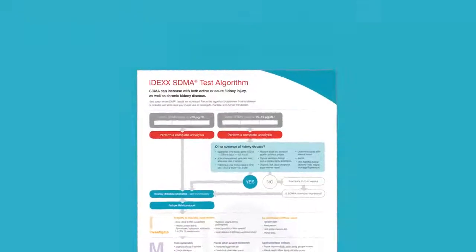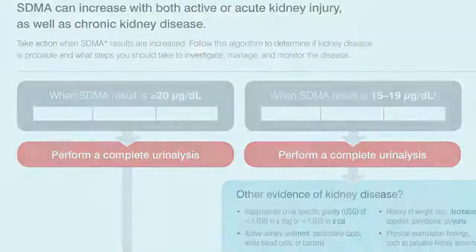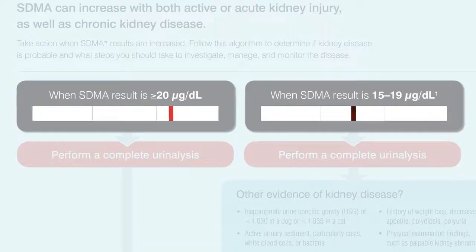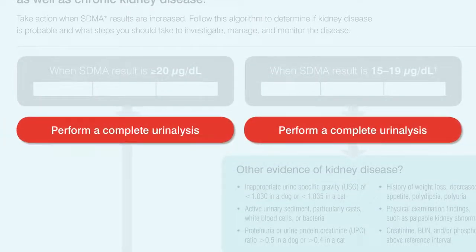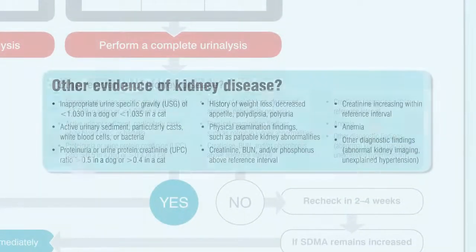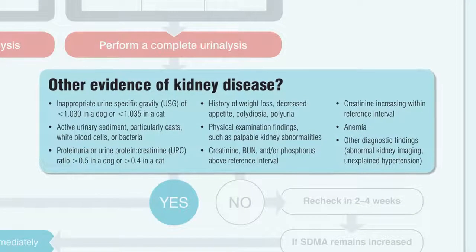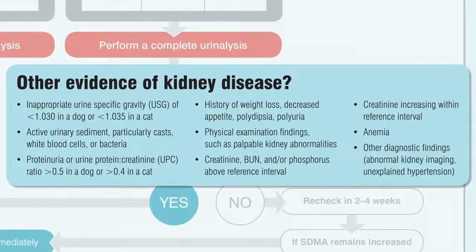The IDEX-SDMA test algorithm shows you what actions to take when SDMA concentrations are increased. With any increased SDMA result, perform a complete urinalysis if one has not already been done. If the SDMA result is within the range of 15 to 19 micrograms per deciliter, look for other evidence of kidney disease.